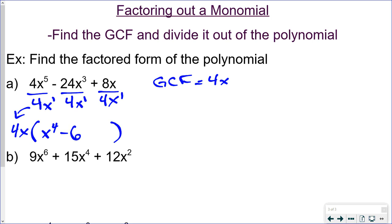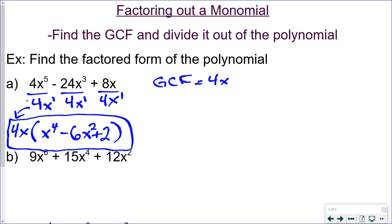Dividing: 4 divided by 4 is 1, and x to the fifth divided by x to the first is x to the fourth. Then 24 divided by 4 is 6, and x cubed divided by x is x squared. Then 8 divided by 4 is 2, and x divided by x is x to the zero, which is just 1 — so it goes away. That gives us the factored form. You can check by distributing back: 4x times x⁴ is 4x⁵, 4x times 6x² is 24x³, and 4x times 2 is 8x.